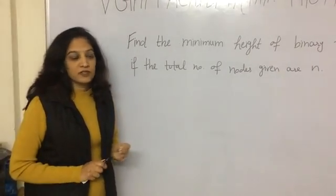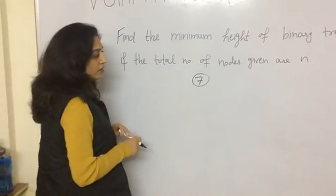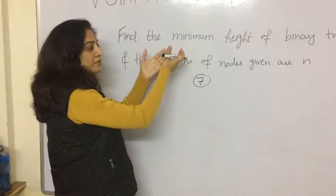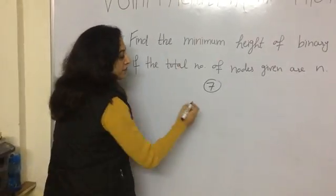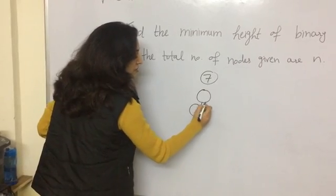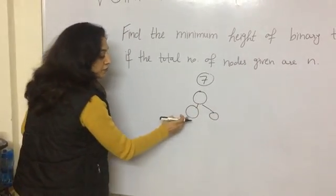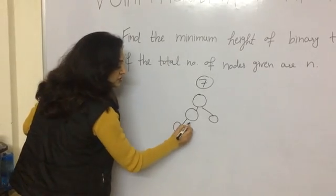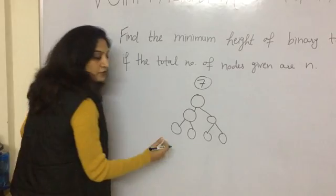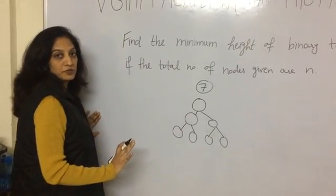Let's start with an example. Say we have a total number of nodes equal to 7. How will I construct a binary tree such that the height is minimum? This is the root node, and I am putting the maximum children of this node, which is 2. For this node also, I am putting the maximum children, which is 2. And for this node also, I am putting the maximum children. So it is giving me the minimum height of this binary tree.